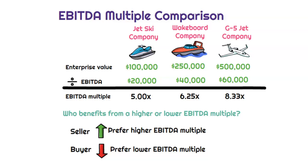EBITDA multiples are most commonly brought up when you're talking about selling or buying a company. As a seller and buyer, you want to compare the EBITDA multiple for the company you're purchasing or selling to other recent multiples, to understand if you're paying more or less, or if you're a seller, whether you're selling for as much as you can or if your sales price is potentially too high. Enterprise value is a difficult number to calculate, but we won't get into that here.